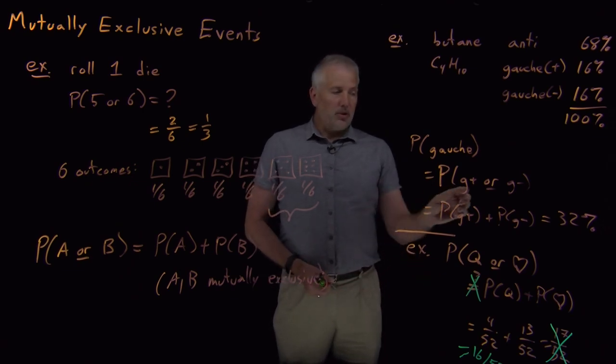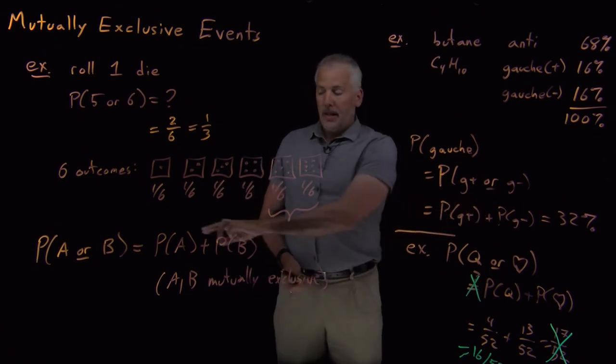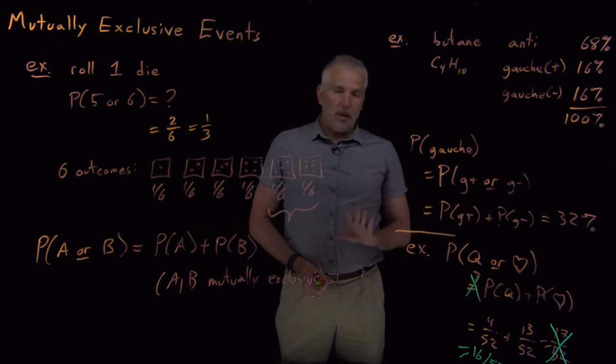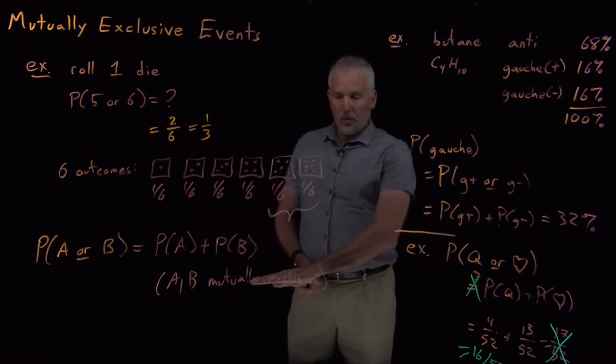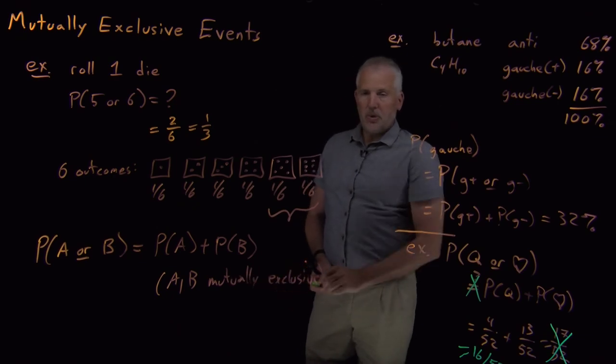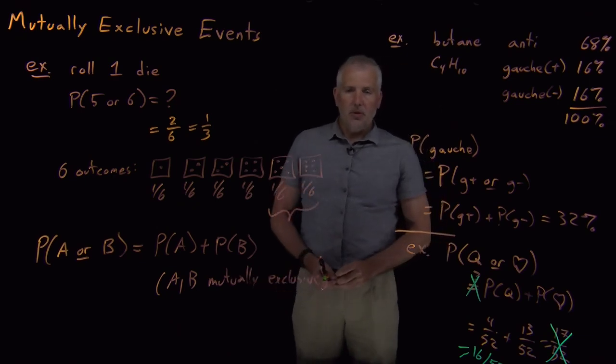So that example is here just to show us that the simple rule is whenever you see an or problem, add the two individual probabilities. That works a lot of the time, but it only works if the events you're talking about are mutually exclusive. So our next step will be to understand the other basic rules of probability and then to see what happens when we combine them with one another.